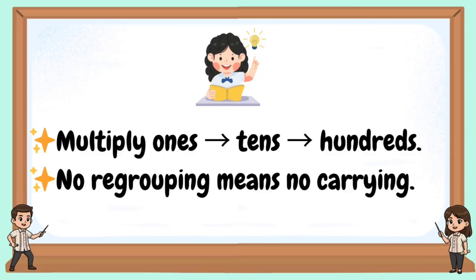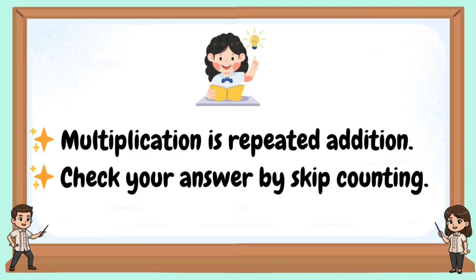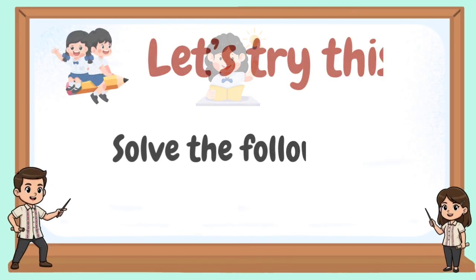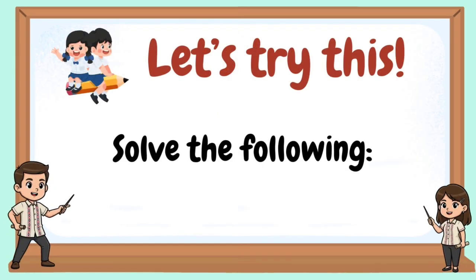No regrouping means no carrying. Multiplication is repeated addition. Check your answer by skip counting. Let's try this — solve the following.